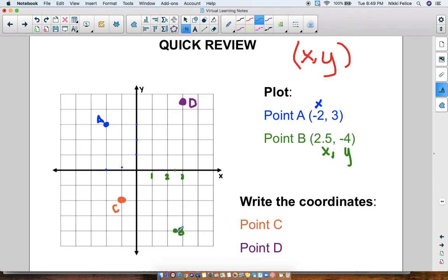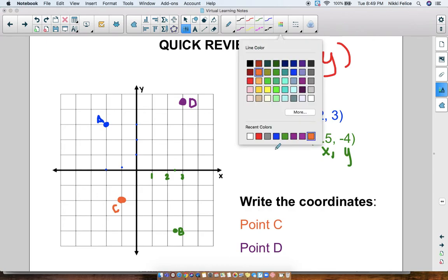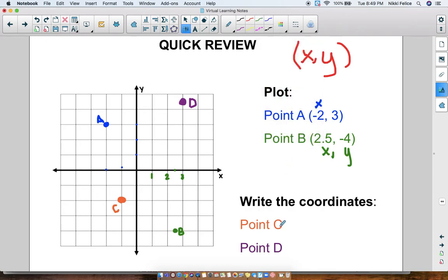So this point right here, this is 2.5, comma, negative 4. Now, point C, I want to write the coordinates of point C. So remember, to do that, first I need to write the x-coordinate, then I need to write the y-coordinate.